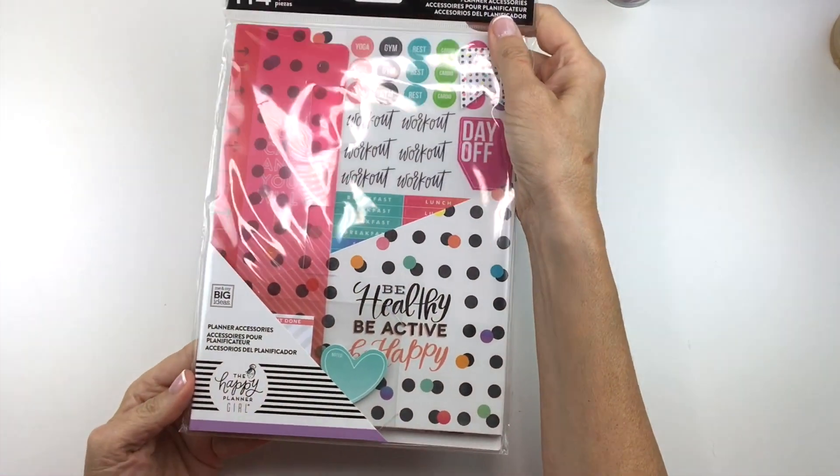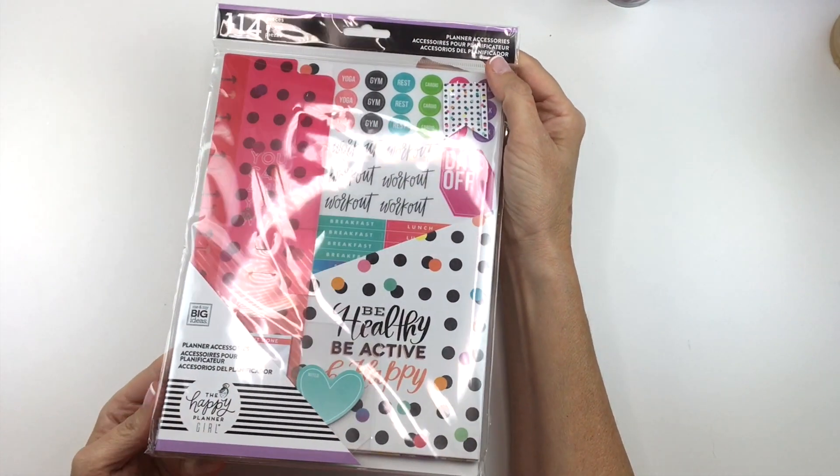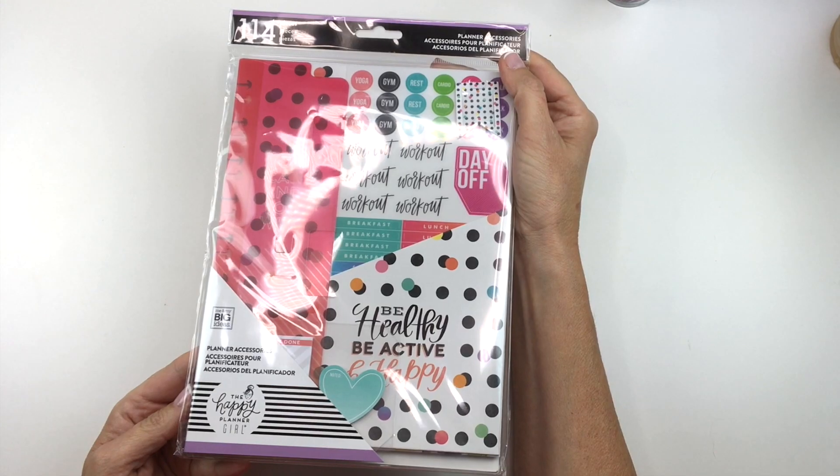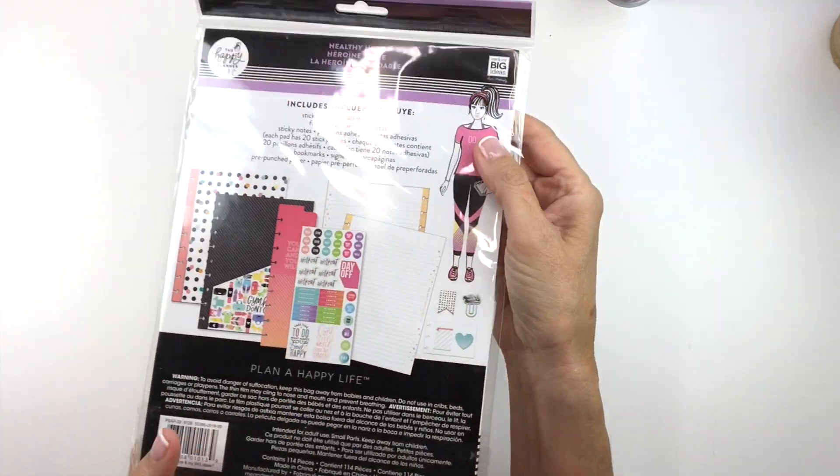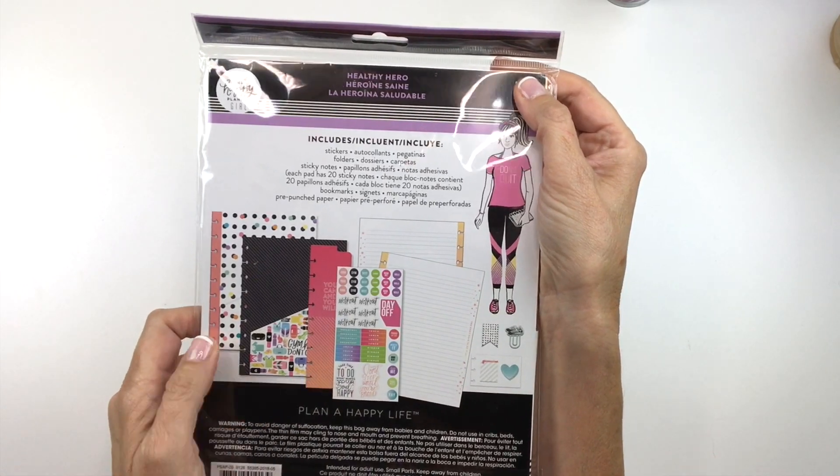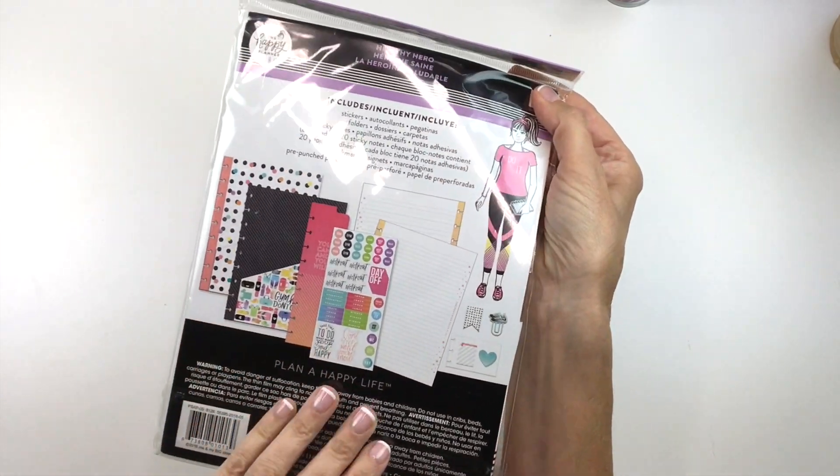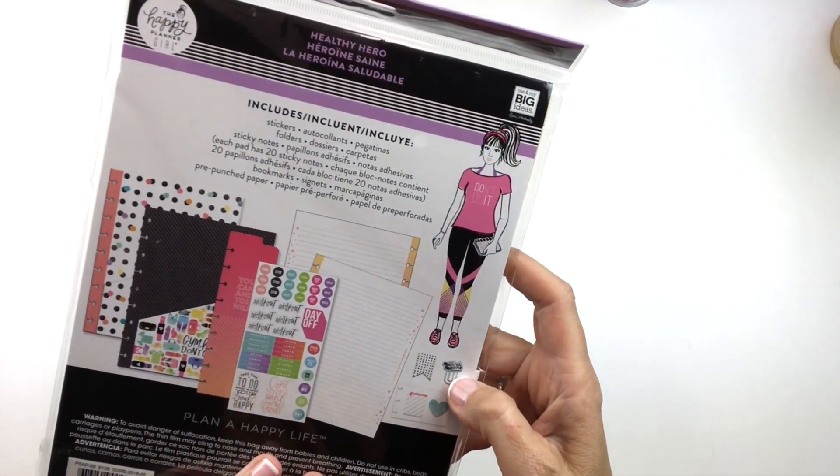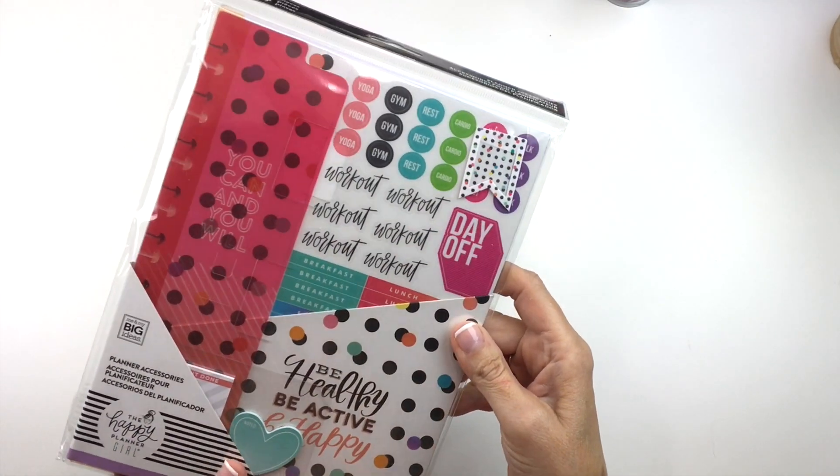And last but not least, I am giving away this Healthy Hero Planner accessory pack full of stuff. You've got folders and bookmarks and dividers and stickers and paper, sticky notes.